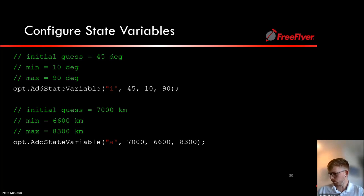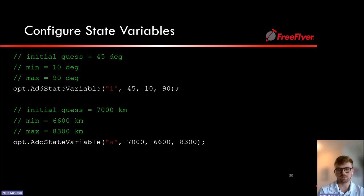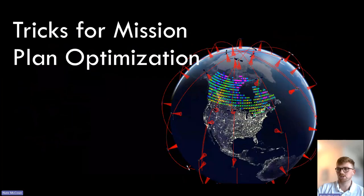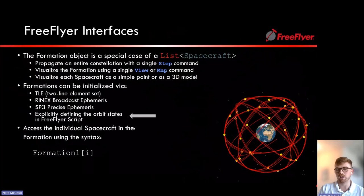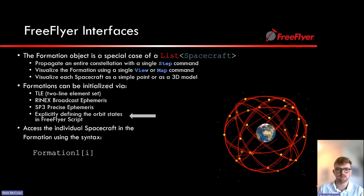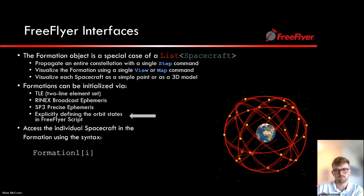Q: Are there space debris models available in FreeFlyer? A: FreeFlyer doesn't have dedicated debris models, but it can connect to sources like Celestrak. You can import a TLE file into FreeFlyer—the debris field visualization sample does exactly this, taking TLEs from Celestrak and modeling that formation in FreeFlyer. If you have access to TLEs representative of space debris, you can model them in FreeFlyer.